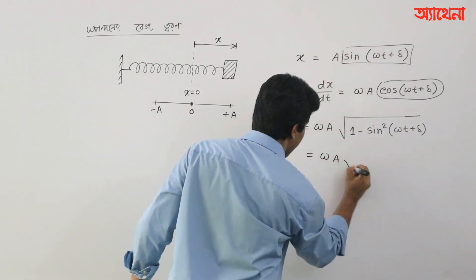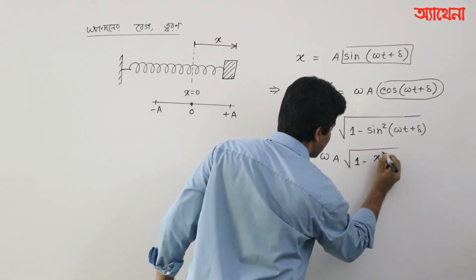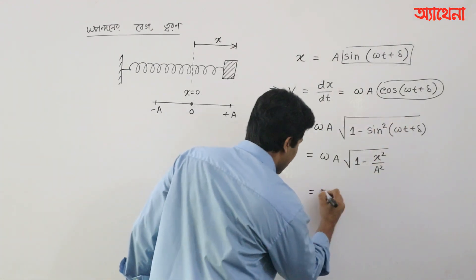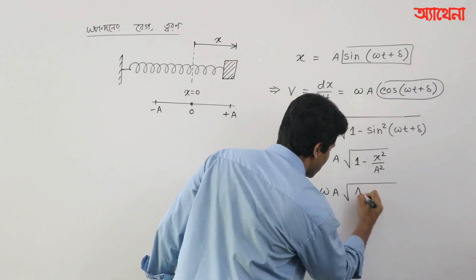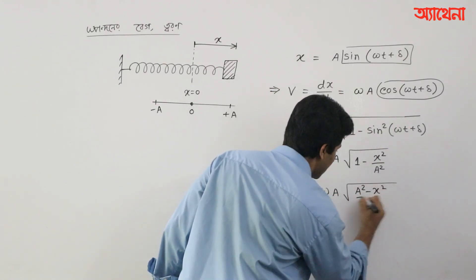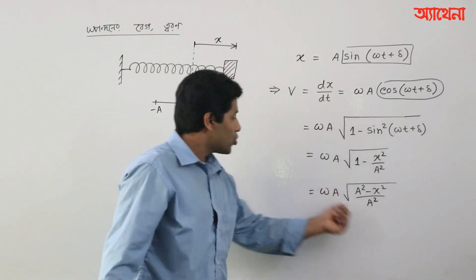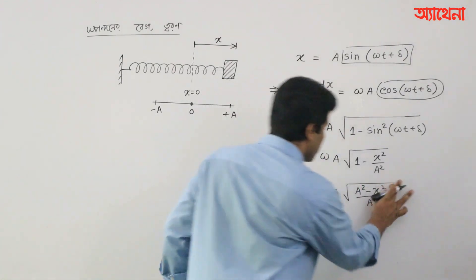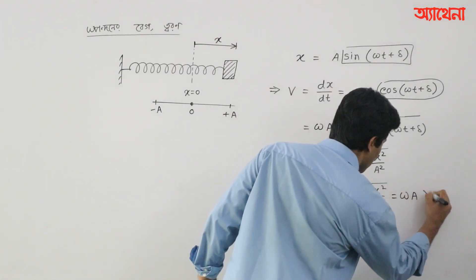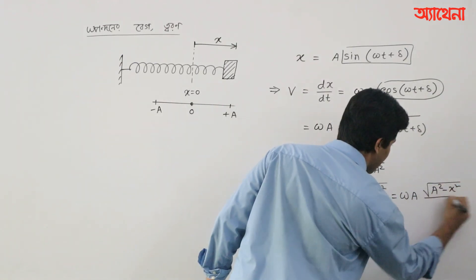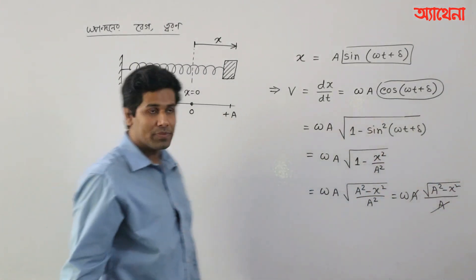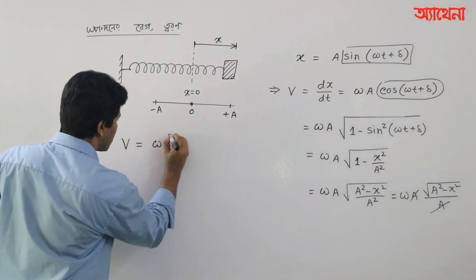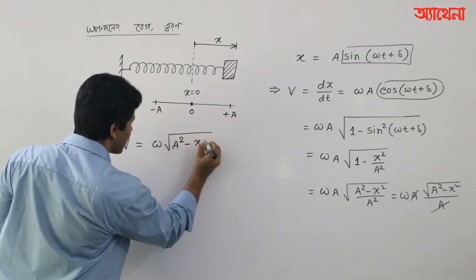That is going to be omega a times root over 1 minus x squared divided by a squared. So, here is a squared minus x squared divided by a squared. Root over a squared is a. So this part is omega a times root over (a squared minus x squared) divided by a. That means it simplifies to omega times root over (a squared minus x squared).